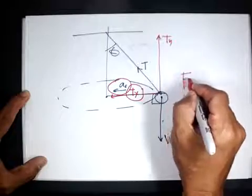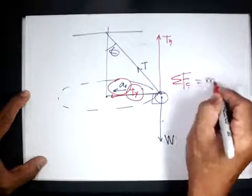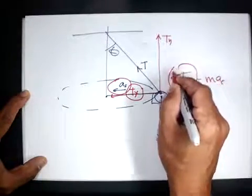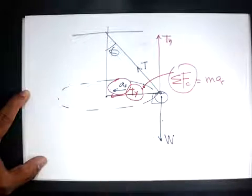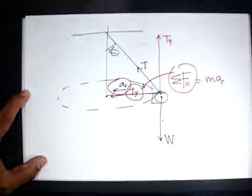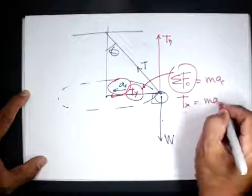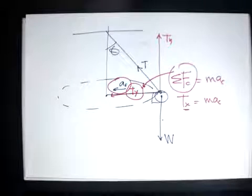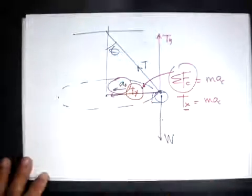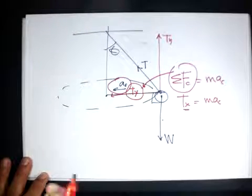Now this tension on X parallel to AC, so this is the only force that contributes to the circular motion. Same direction, right? So FC equal to MAC. FC is contributed by the tension that is parallel to AC. In this case, TX equal to MAC. This TX is either T sin theta or T cos theta. You decide, don't memorize X mesti cos, Y mesti sin. Tak semestinya, depends on the angle.